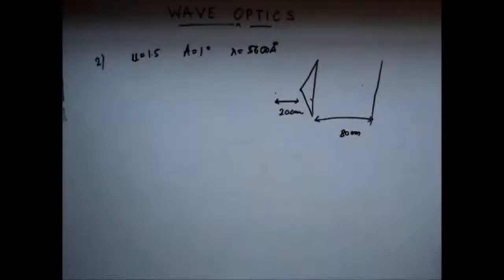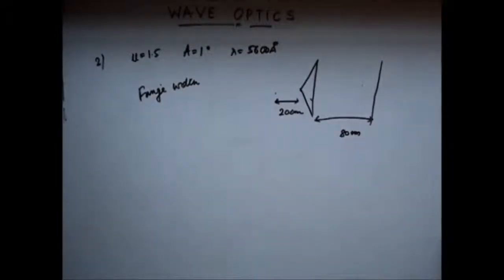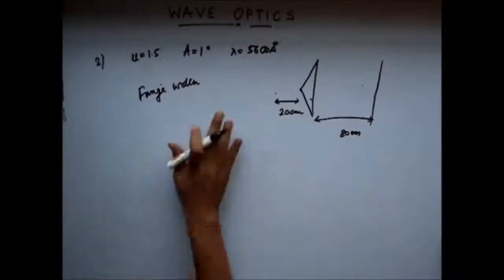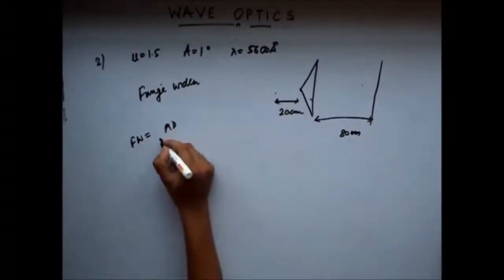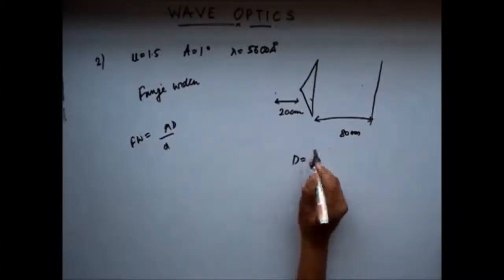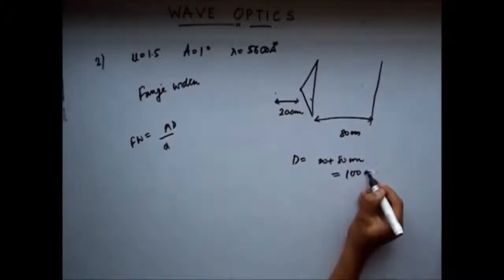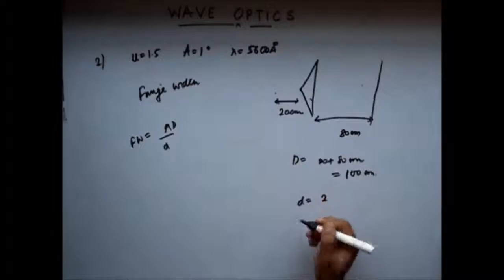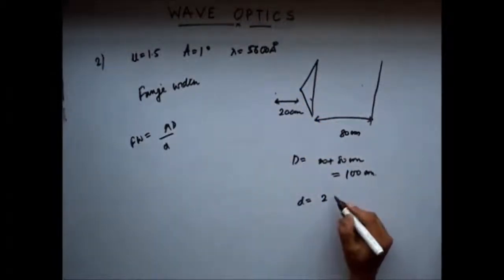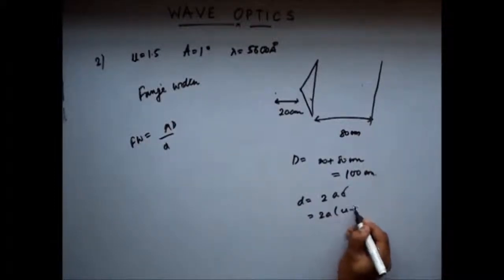The question is to find the fringe width. The fringe width is given by λD/d. Here D = 20 + 80 = 100 centimeter. The distance d between the two virtual sources is given by 2a(μ − 1)α, where a is 20 centimeter or 200 millimeter, μ − 1 = 0.5, and α is the prism angle of 1 degree.